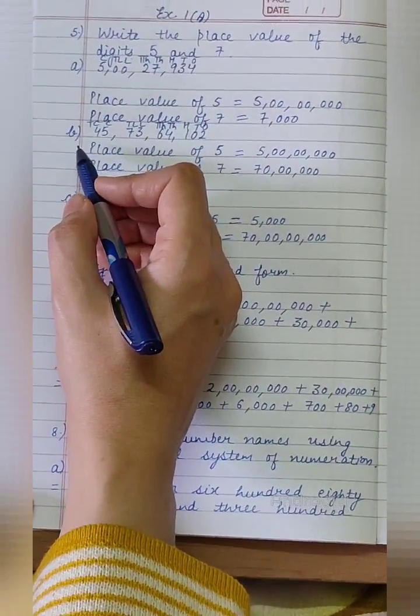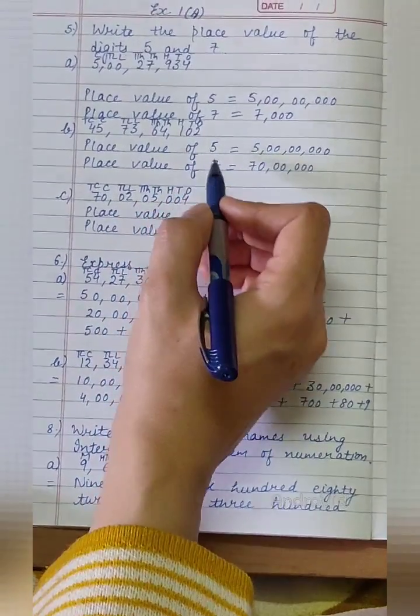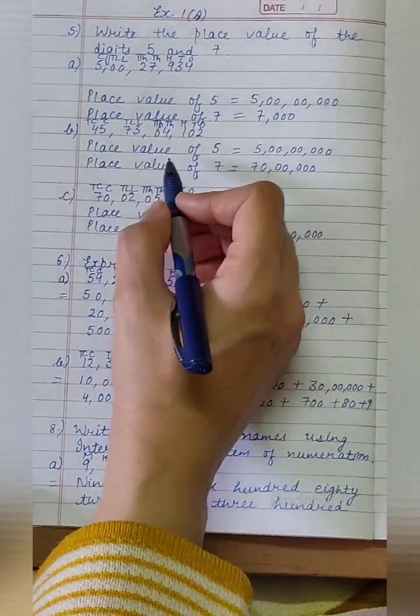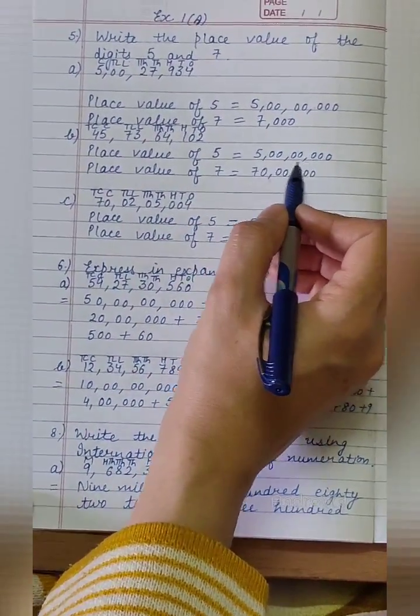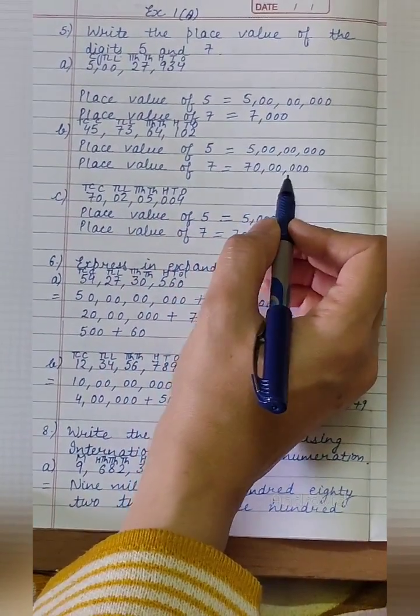Let's move to part B. Here, 5 is at crore's place, so its place value will be 5 crore. And 7 is at 10 lakh place, so its place value will be 70 lakh.